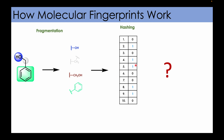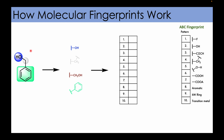The next big question is how this is achieved. Let us suppose we have a hypothetical fingerprint ABC which we want to calculate for this molecule. This ABC fingerprint has a set of 10 predefined structural keys — each key represents a specific structural feature or fragment in a molecule. In order to generate the ABC fingerprint for this molecule, we compare the structural features present in the molecule to those listed in the pattern of this fingerprint.